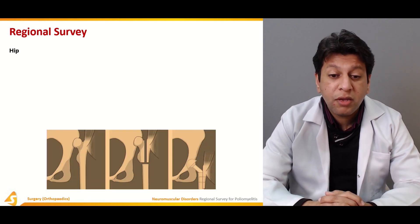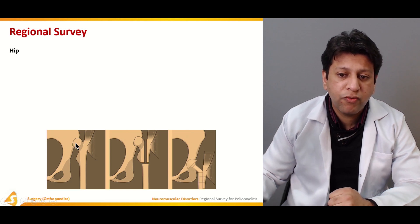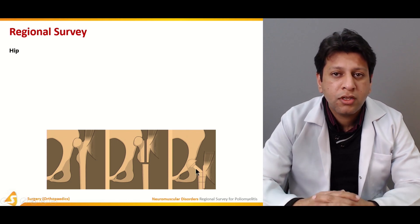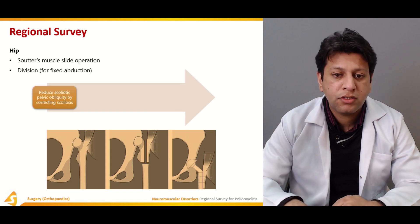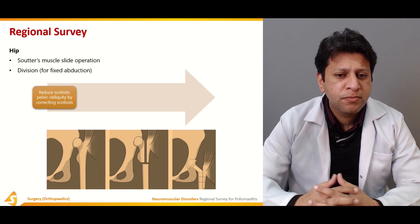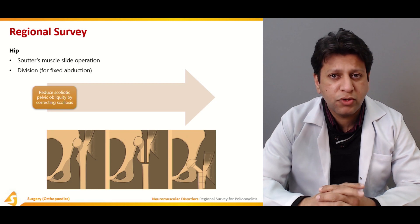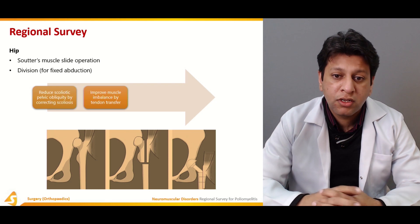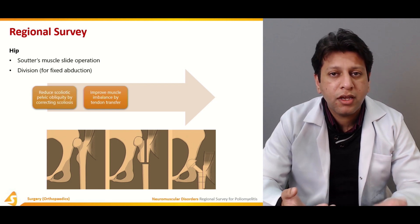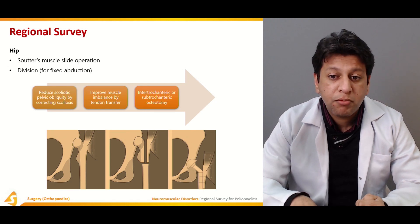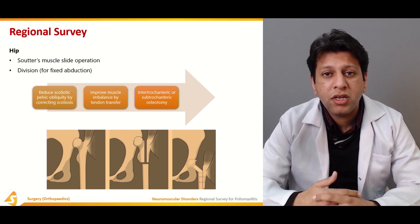Coming to the hip — as shown in this diagram, there is a false acetabulum, the leg is short, and a surgical procedure is done where the femoral head is brought down with a prosthesis to address the limb length discrepancy. This is called Souter's muscle slide operation, used for fixed abduction contractures usually associated with pelvic obliquity and scoliosis, which may also need addressing. Sometimes this can be addressed with osteotomies, but spinal fusion may ultimately be required. Muscle imbalance may be improved with tendon transfers, but if tendons are not available, arthrodesis is the next option. Inter- or subtrochanteric osteotomies can be done to address varus/valgus malalignment and limb shortening, and bone transport at the femoral level may also be performed.